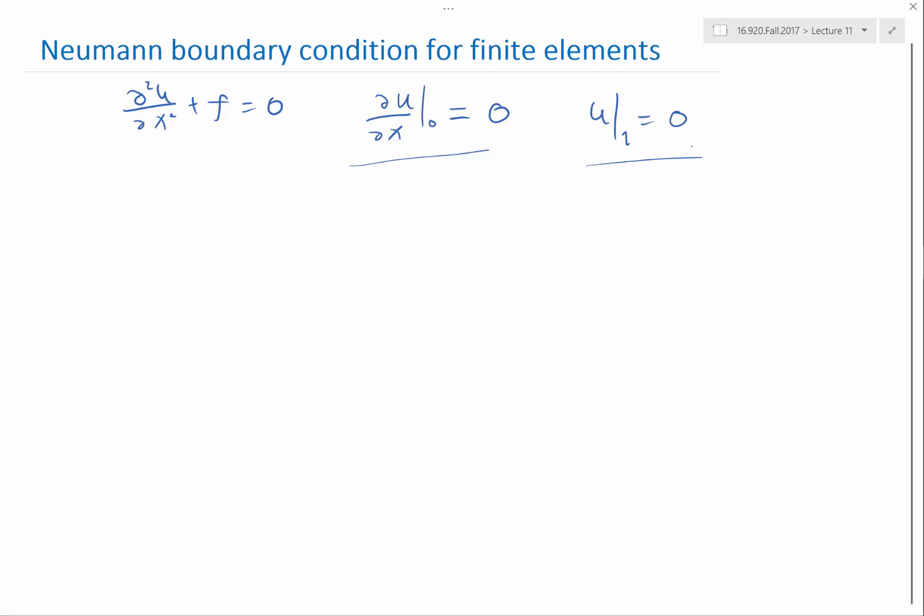So it turns out there is a natural way of enforcing the boundary condition. Instead of forcing the derivative of u to be 0 at the boundary, there is actually a smarter way of enforcing this boundary condition.